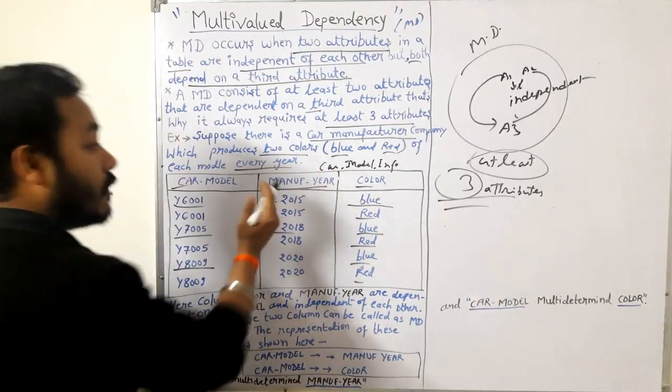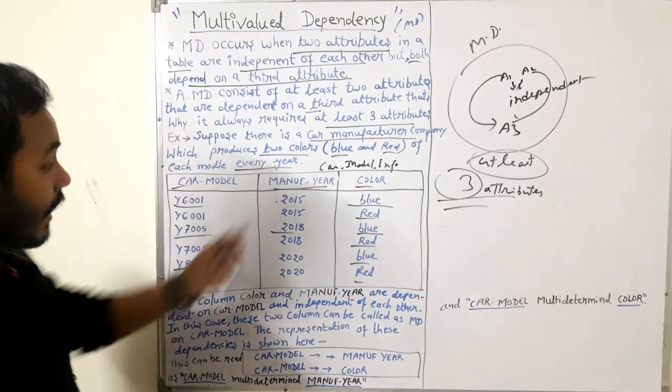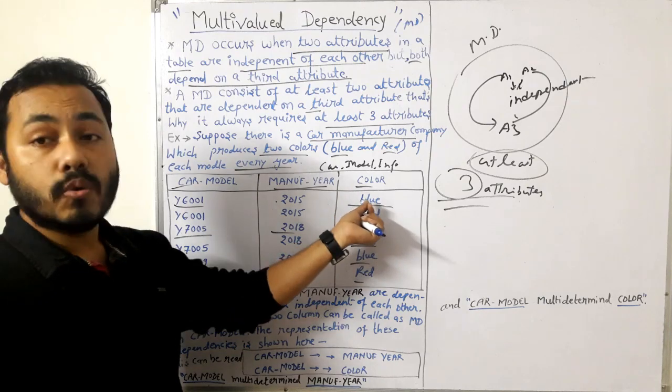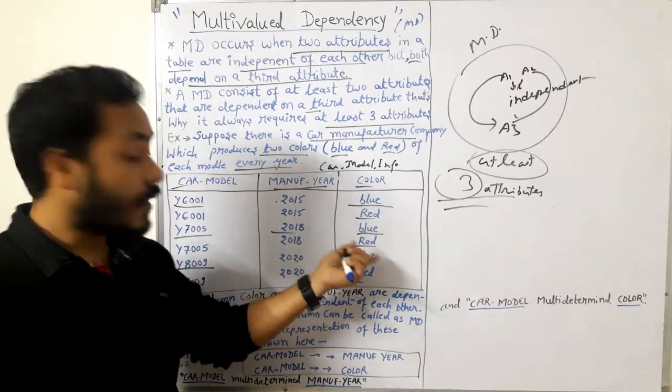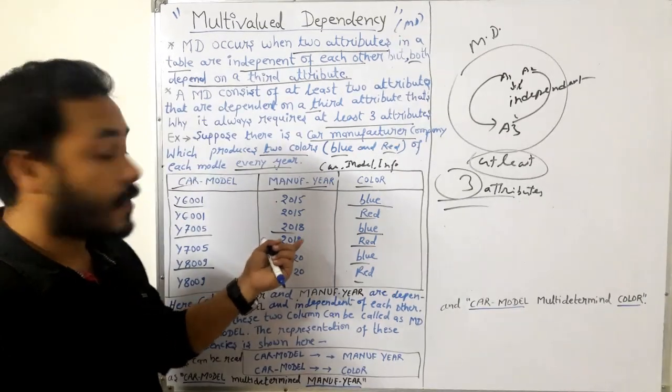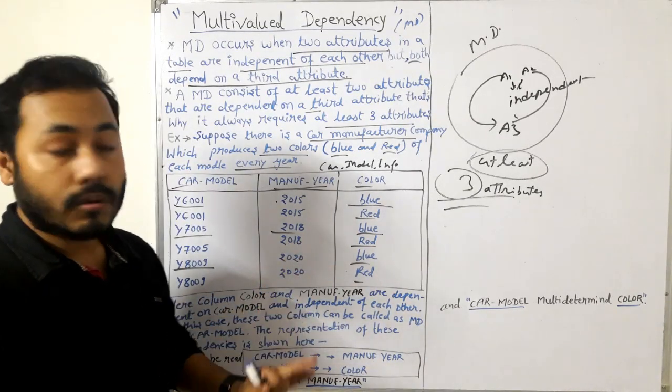They are independent of each other. Why? Can I say that 2015 is related to blue only? Can I say that 2018 is related to red or red is related to 2018? No.